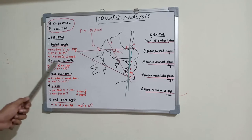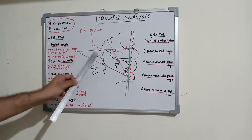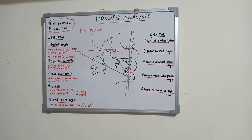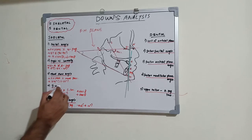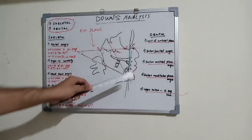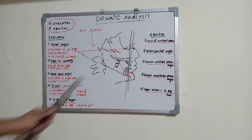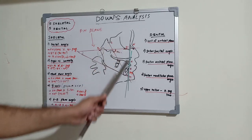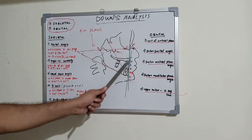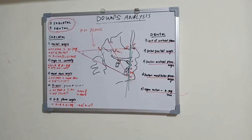To recap the skeletal parameters: facial angle is FH plane to nasion-pogonion, 87.8 degrees, increases in Class 3, decreases in Class 2. Angle of convexity is nasion–point A to point A–pogonion, approximately 0 degrees, ranging from minus 8.5 to 10 degrees. Mandibular plane angle is FH plane to tangential line, 21.9 degrees, range 17 to 28. Y-axis is FH plane to sella-gnathion, 59 degrees, increases in Class 2, decreases in Class 3. AB plane angle is always negative, positive in Class 3 malocclusion.